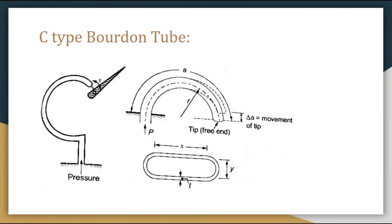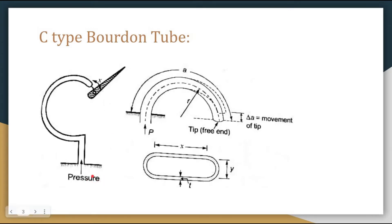The first category is the C-type Bourdon tube. As you can see in this diagram, one end called the tip of the tube is sealed and is called the free end. The other end of the tube is fixed to a socket where the pressure to be measured is applied. So the first end is sealed and called the free end, and the other end is fixed to the socket.